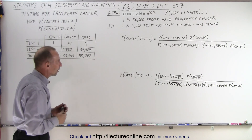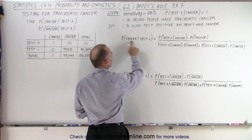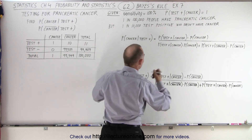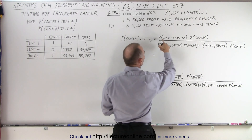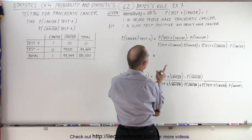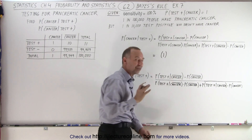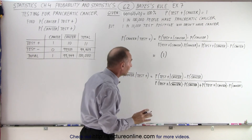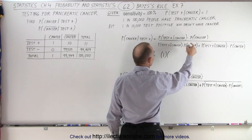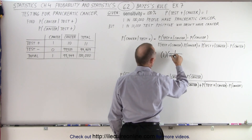All right, let's plug in the numbers and see how this works. First we're going to calculate the probability that a person has cancer if they test positive. This is equal to the probability of testing positive if they have cancer. So what is the probability that you test positive if you have cancer? Well, that is equal to 1. There's a 100% probability that you'll test positive if you have cancer, and then we multiply that times the probability of having cancer, which is 1 in 100,000.